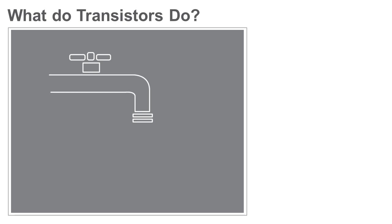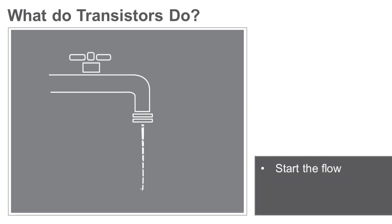It helps to think of a transistor as your kitchen faucet. A tap can control the flow of water. It can start the flow, stop the flow, and adjust the flow to different levels.